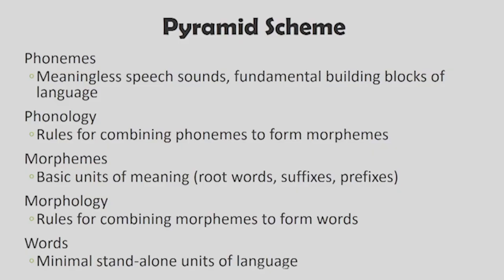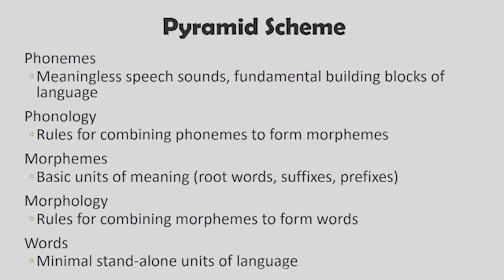These basic sounds combine using certain rules called phonological rules. Phonology is the rules for combining phones to form morphemes. Morphemes are the basic units of meaning — words like noun endings such as 'ing', or suffixes like 'ly', so 'true' and 'truly' is that kind of thing. Morphemes are combinations of phonemes and are the basic units of meaning — they are the root words, suffixes, and prefixes. Rules for combining morphemes to form words are what is called morphology.